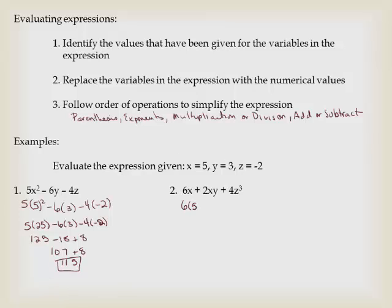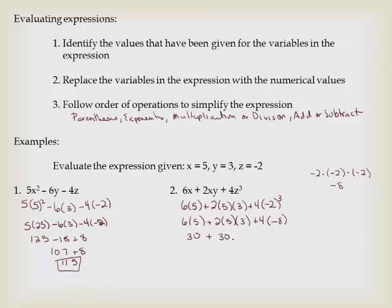Here I have 6 times x, so that's 6 times 5, plus 2 times x times y, plus 4 times z, which is negative 2, to the third. I'm going to do my exponent first. Okay, negative 2 to the third, because I have an odd exponent, this is negative 2 times negative 2 times negative 2, that's negative 8. 6 times 5 is 30, 2 times 5 times 3 is also 30, and 4 times negative 8 is negative 32. So that's going to be 60 minus 32, which is going to be 28.